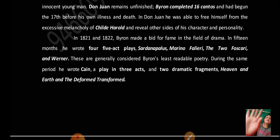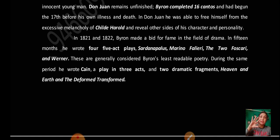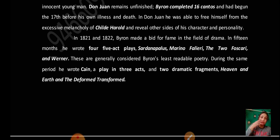During the same period, Byron wrote Cain — a play in three acts — and two dramatic fragments: Heaven and Earth, and The Deformed Transformed. These were written around 1821 and 1822, and are considered among the least-read of his works.